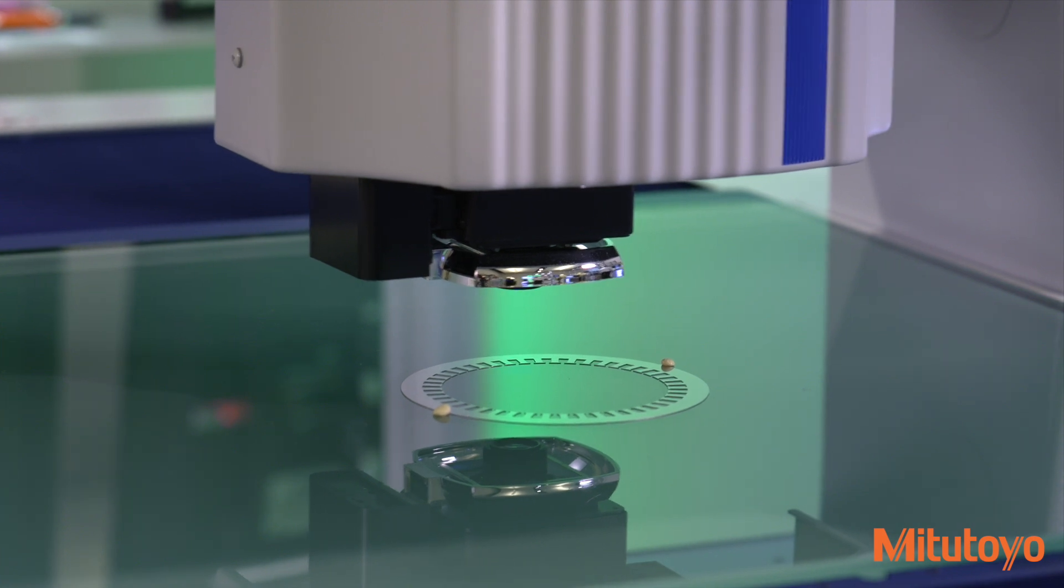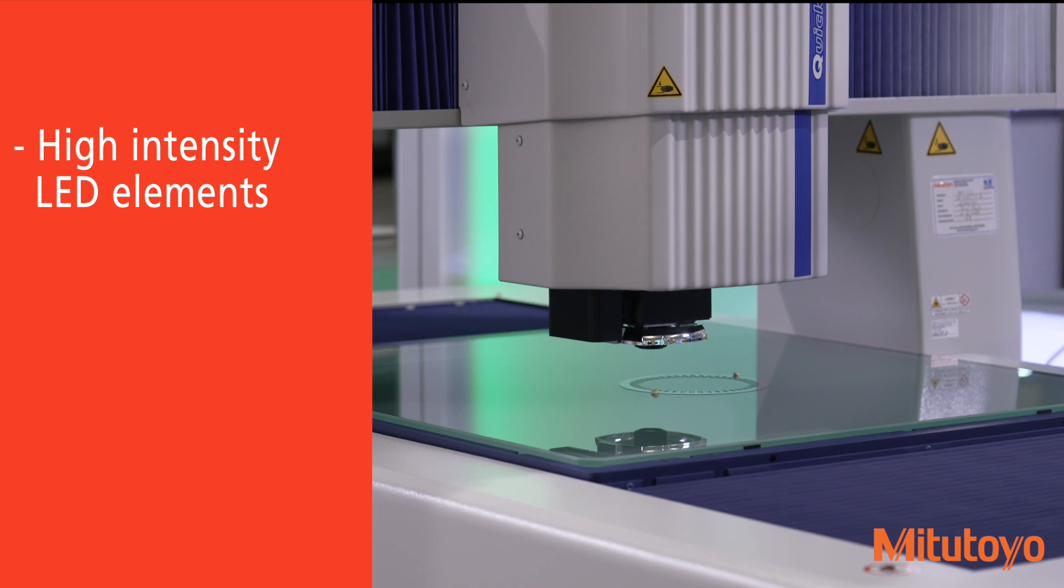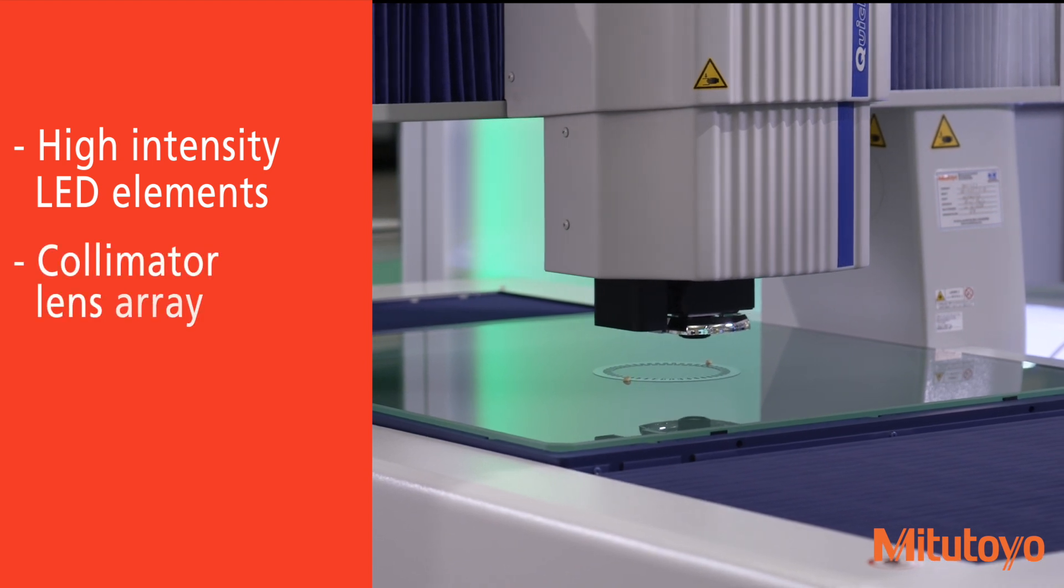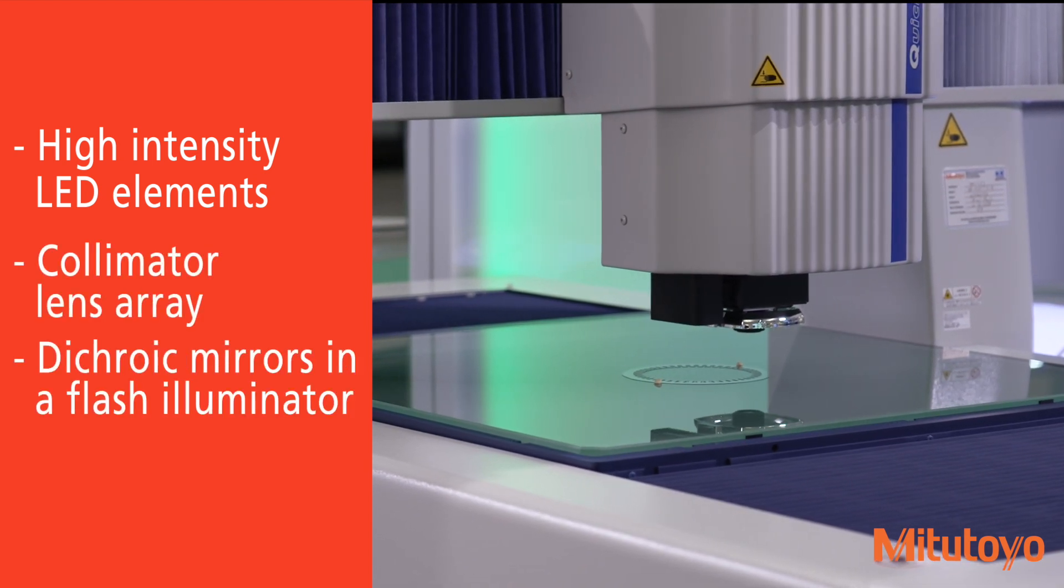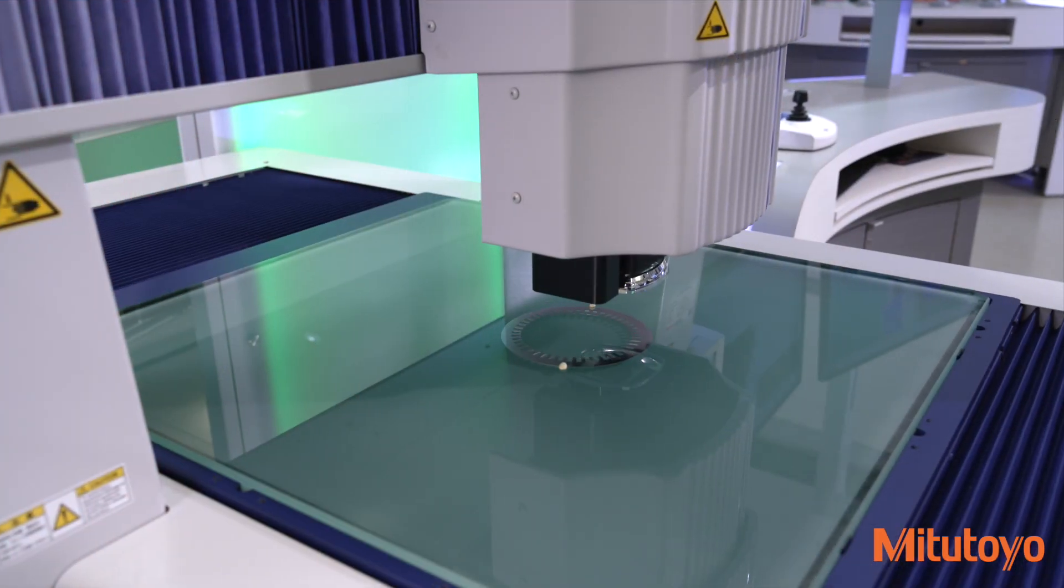The stroboscopic illumination system uses ultra-high intensity LED elements, a collimator lens array and dichroic mirrors in a flash illuminator, enabling non-stop vision measurements.